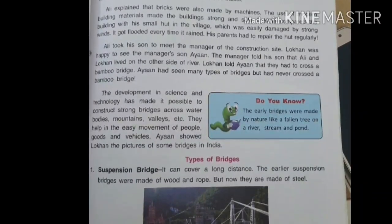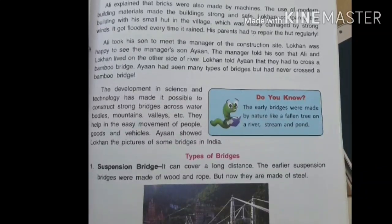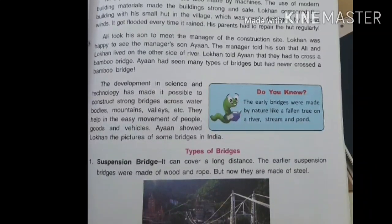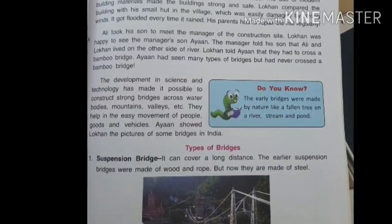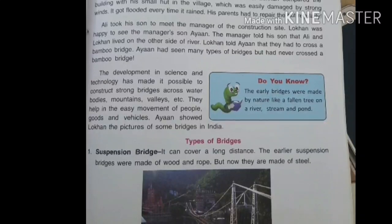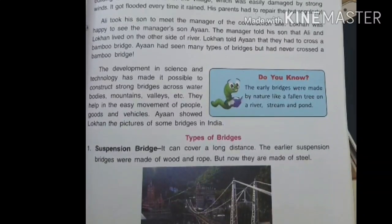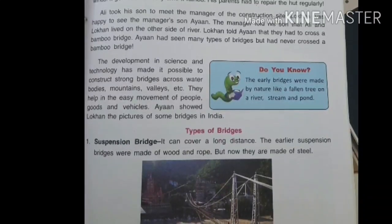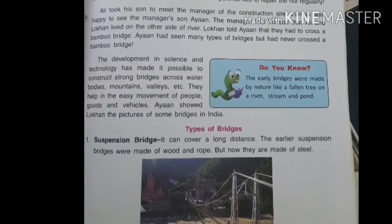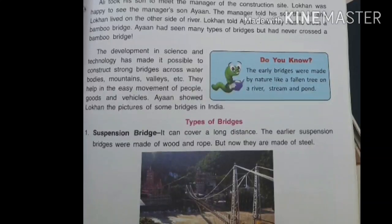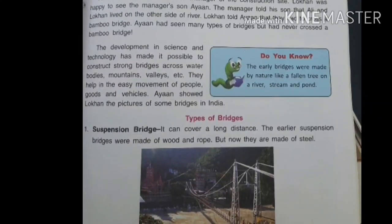The reddish-brown bricks are brought from the kiln to the construction site in trucks. At the construction site, Lokan met with Ayan, who told him about different types of bridges. Now let us learn about different types of bridges.